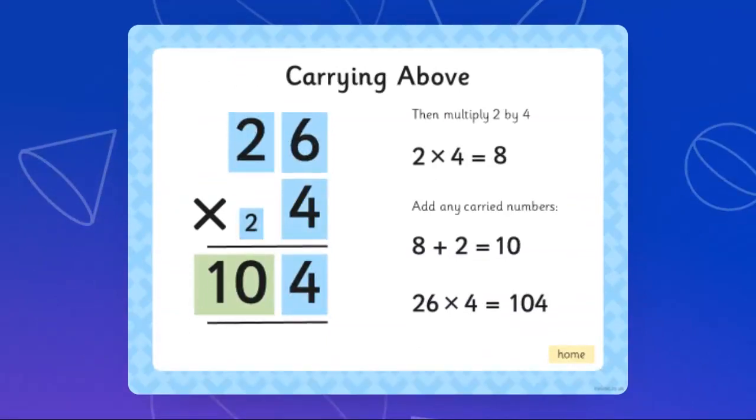Then add any carried numbers. So you go 2 times 4, which is 8, and then I add the 2, which makes it 10. So 26 times 4 equals 104.